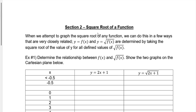In section 2, we talk about the square root of a function. While we talked about transformations in relation to a radical graph, now we're going to talk about if we already have a graph and we're going to take the square root of it. When we attempt to graph the square root of a function, we can do it in a few ways, and they're very closely related to what we've already been doing.